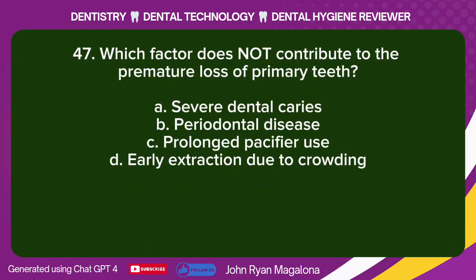Question 47: Which factor does NOT contribute to the premature loss of primary teeth? A. Severe dental caries. B. Periodontal disease. C. Prolonged pacifier use. D. Early extraction due to crowding. Answer: C. Prolonged pacifier use.